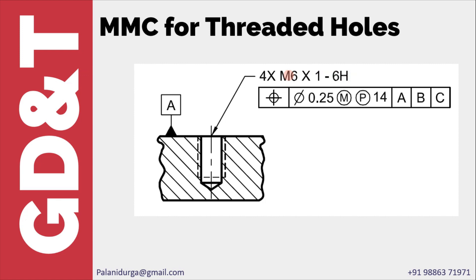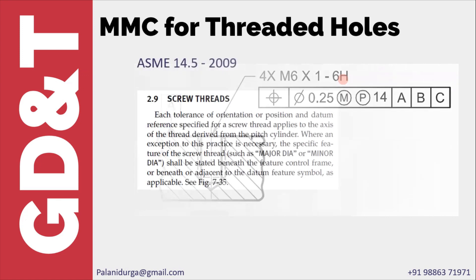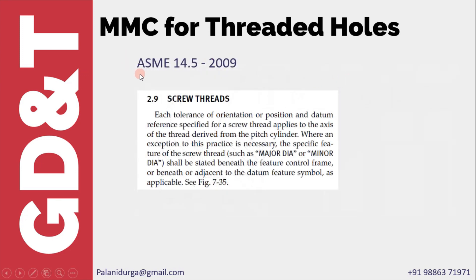This tolerance can be converted into upper limit and lower limit so that we can get the maximum material condition and least material condition. To do that, keep two things in mind. First, in accordance with ASME Y14.5-2009, by default the geometrical tolerance is applied to the pitch cylinder pitch diameter — you should be very careful with that.